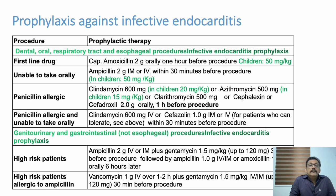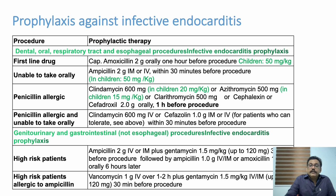For genitourinary and GI procedures, high-risk patients receive Ampicillin plus Gentamicin. High-risk patients allergic to penicillin receive Vancomycin plus Gentamicin. Below the diaphragm, gram-negative coverage is the priority. To summarize: above the diaphragm — gram-positive coverage; below the diaphragm — gram-negative coverage.